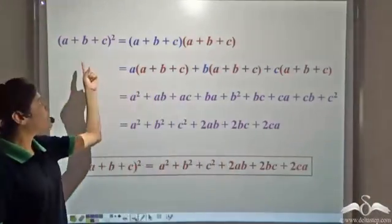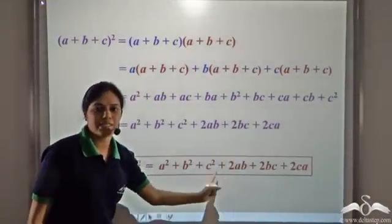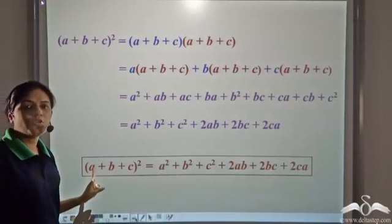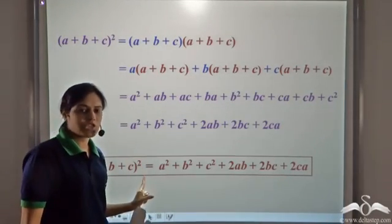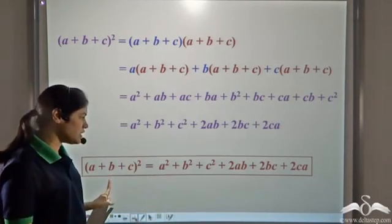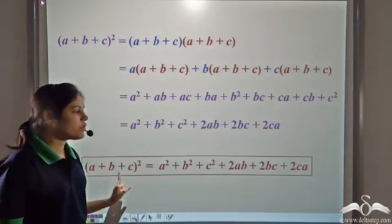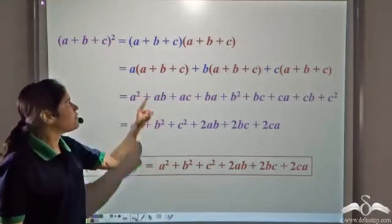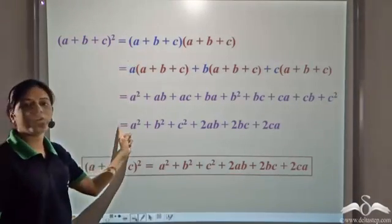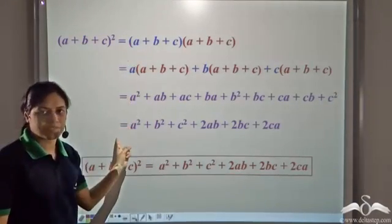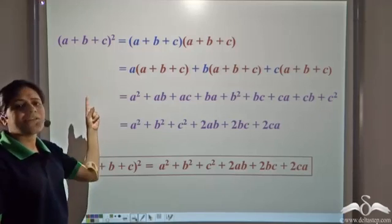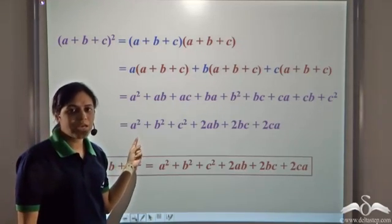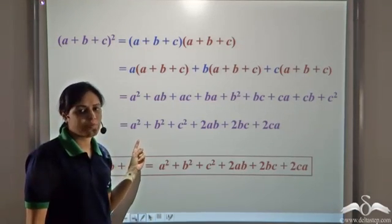So this is a special identity. Whenever you need to square an expression containing three terms, you can directly apply this identity without following these steps. This is a very important identity and you should remember it.